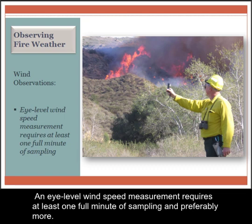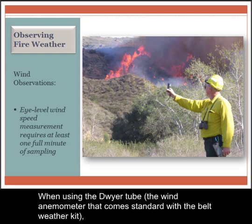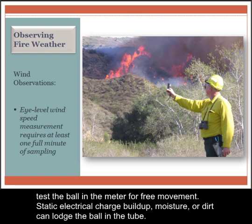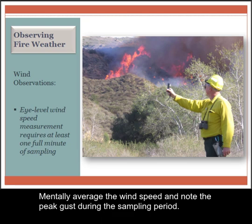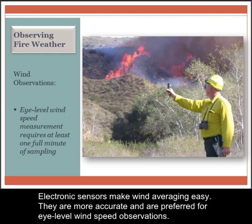An eye-level wind speed measurement requires at least one full minute of sampling and preferably more. When using the Dwyer tube, the wind anemometer that comes standard with the belt weather kit, test the ball in the meter for free movement. Static electrical charge buildup, moisture, or dirt can clog the ball in the tube. Mentally average the wind speed and note the peak gust during the sampling period. Electronic sensors make wind averaging easy. They are more accurate and preferred for eye-level wind speed observations.